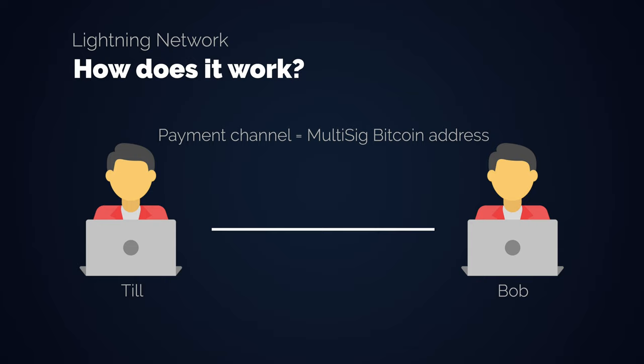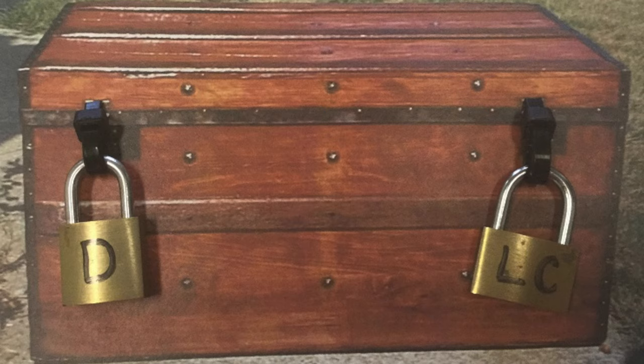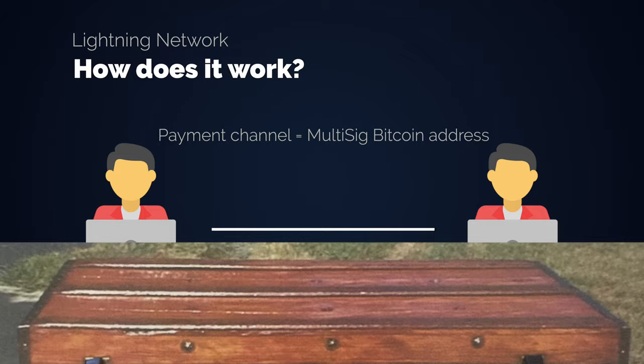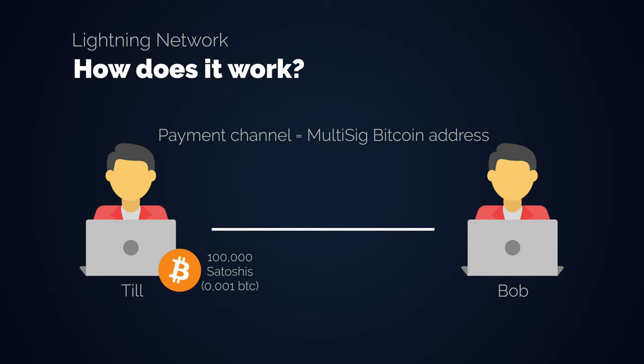In the Lightning case, there are two-of-two addresses, which means both people involved need to sign a transaction if they want to send funds from this address. You can think of this multi-signature address as a treasure that you both have one key to, but to open it you both need to be present because both keys are necessary. To open the channel with Bob, I also need to add the so-called funding transaction, which means I specify how much liquidity, or how many satoshis, I want to have in the payment channel. I am sending 100k satoshis to the multi-sig address.